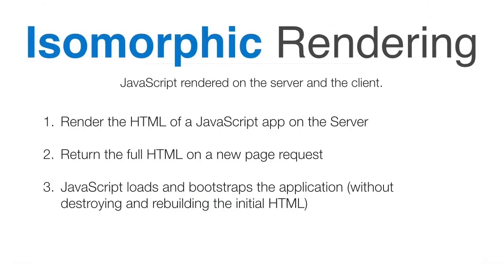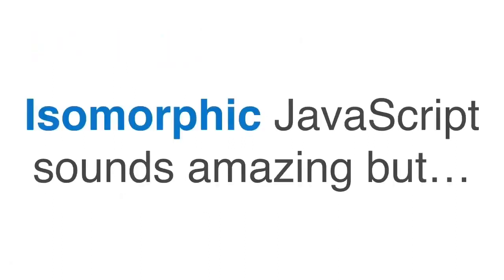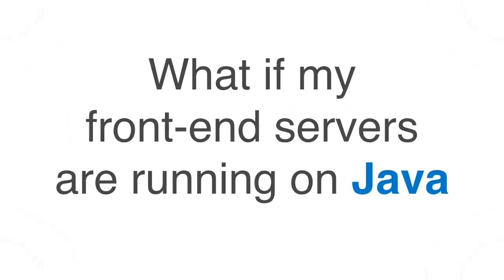This is where isomorphic rendering comes in. I use JavaScript to render on both the server and the client. I render the full HTML of a JavaScript app on the server, return that HTML on a new page request, and then the JavaScript loads and bootstraps the application without destroying or rebuilding the initial HTML the server generated. Isomorphic JavaScript sounds amazing — but what if my front-end servers are running Java?